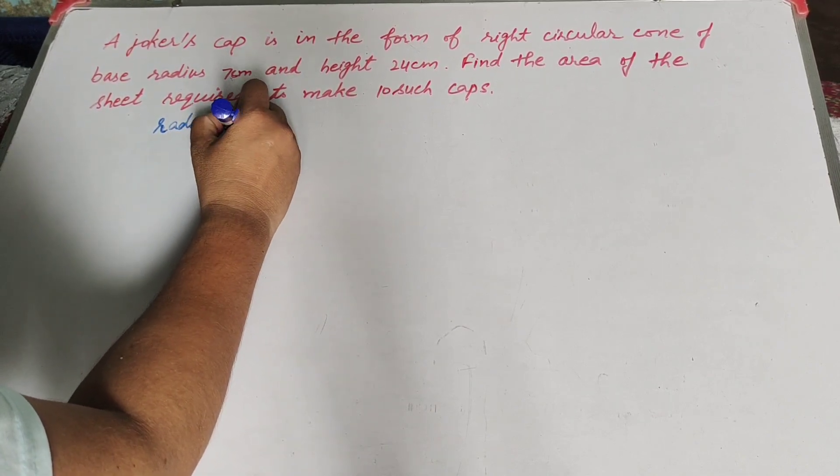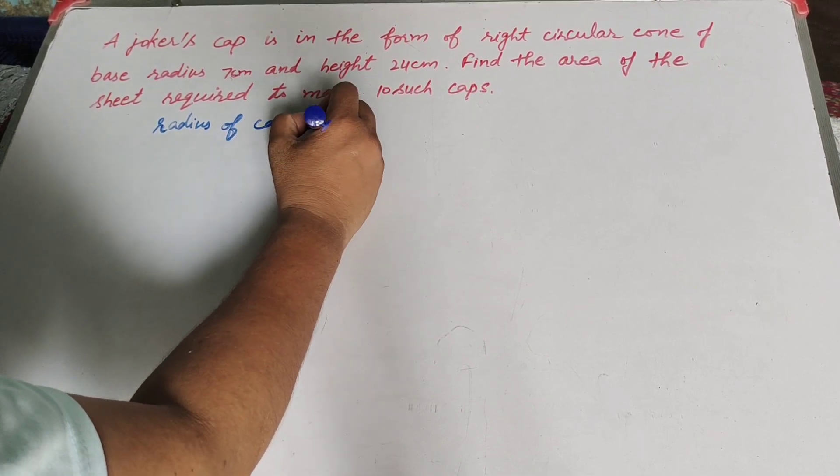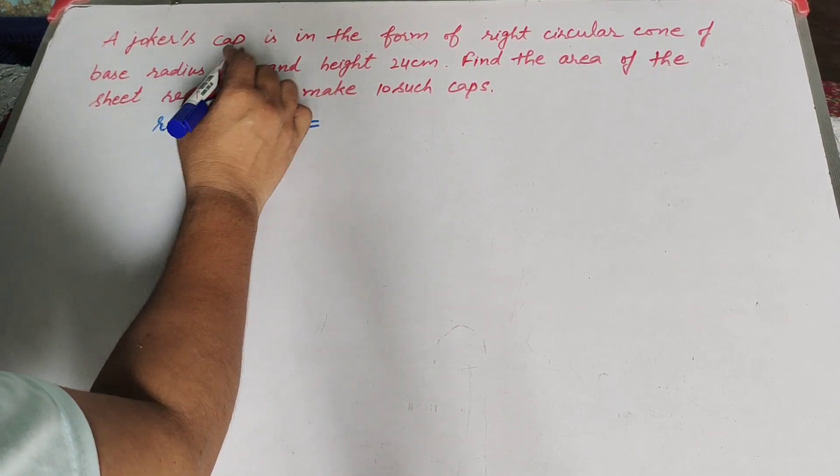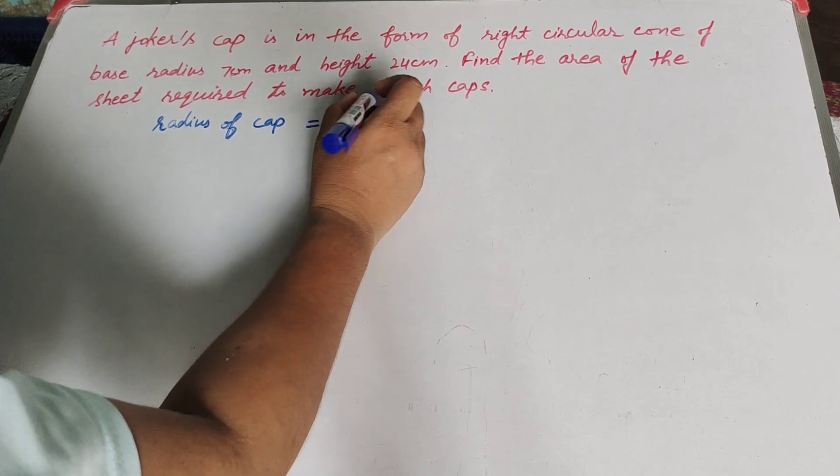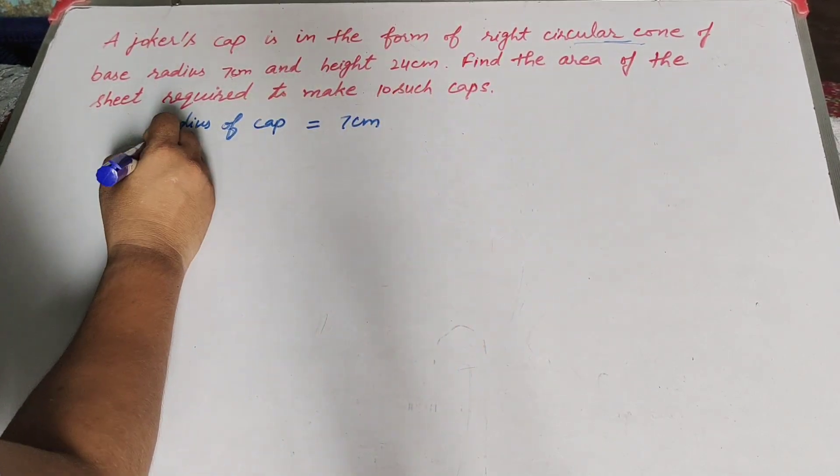Given is the radius of cap, it is equal to 7 cm. The cap is in the form of a right circular cone.